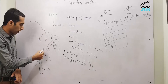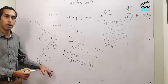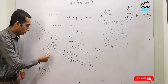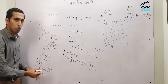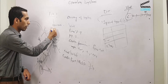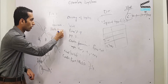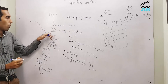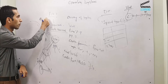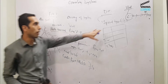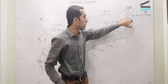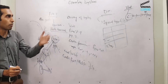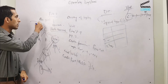When we access a file, we follow the pattern and get access to the file. This process is called path traversal. We have two different types of paths. The first is an absolute path, which starts from the root directory — for example, C drive, then users, then desktop, then my files. The second is a relative path.